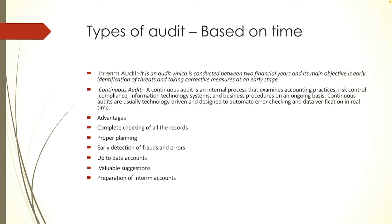Auditing is the verification of accounts at the end of the year — once the accounting process completes, auditing begins. But continuous auditing is conducted at regular interval basis. Since audit is carried out throughout the year, sufficient time is available for detailed checking. Any inquiry and doubt arising in the course of audit can be solved in a better way. The next advantage is proper planning — the auditor can plan his audit work in a systematic manner.